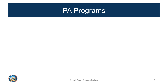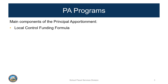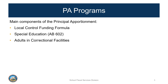What programs are included in the principal apportionment? First, there is the Local Control Funding Formula, LCFF for short, which is the main source of general purpose funding for California school districts, charter schools, and county offices of education. Principal apportionment also allocates special education funding, also known as AB 602, adults in correctional facilities, and a couple of small funding sources.